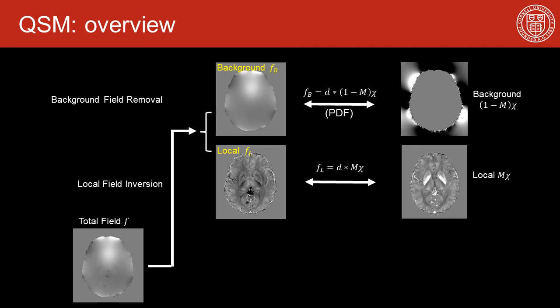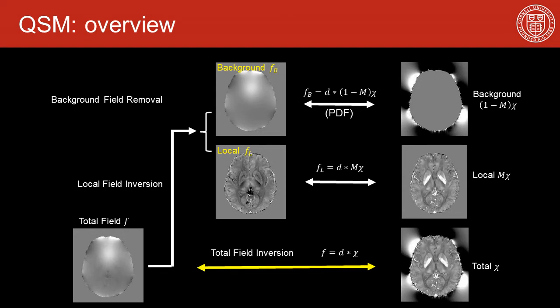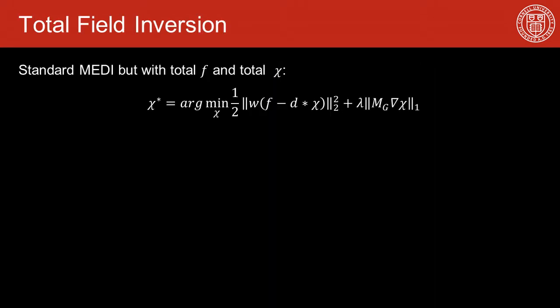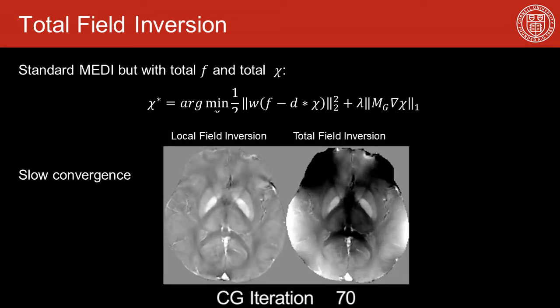Since these two steps use the same forward model in their fitting, why don't we just fit these two at once? Here we propose the framework of total field inversion, which uses the same objective function as the local field inversion method MEDI, except that the input is now the total field and the unknown is the total susceptibility over the entire field of view. We can even use the same iterative CG solver, but the challenge is in speed.